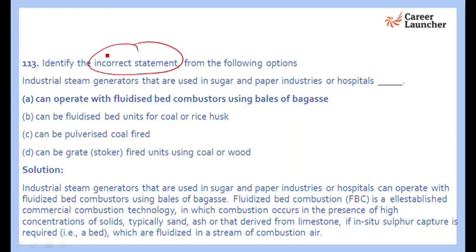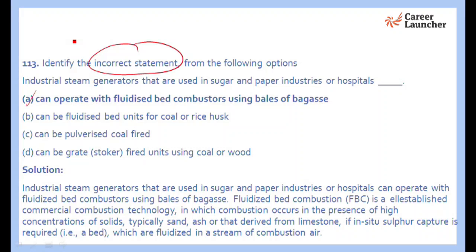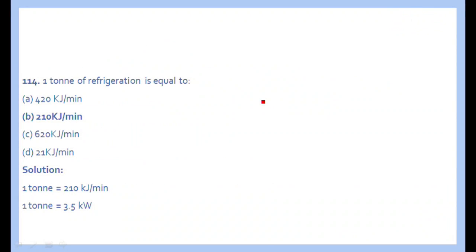The next question asks to identify the incorrect statement about a fluidized bed combustor boiler. The incorrect option is A, which says it can operate with a fluidized bed combustor using bales of gases. Such boilers are used with coal, rice husk, or wood — you cannot use bagasse in that manner. Therefore option A is incorrect.